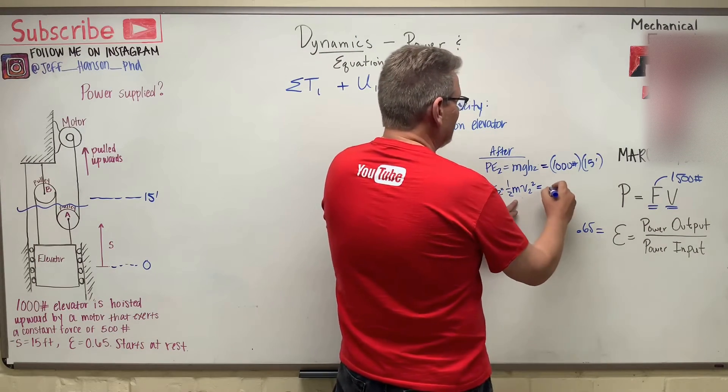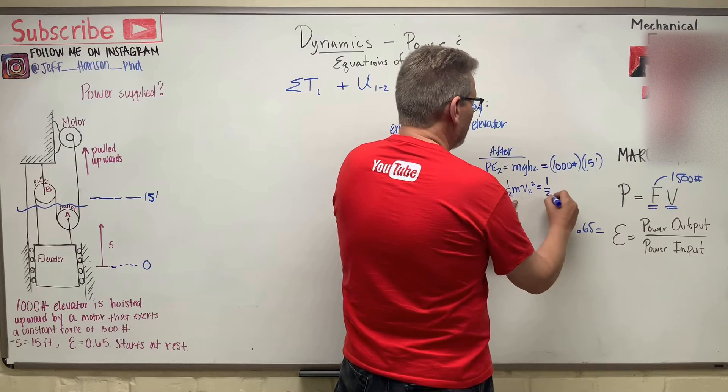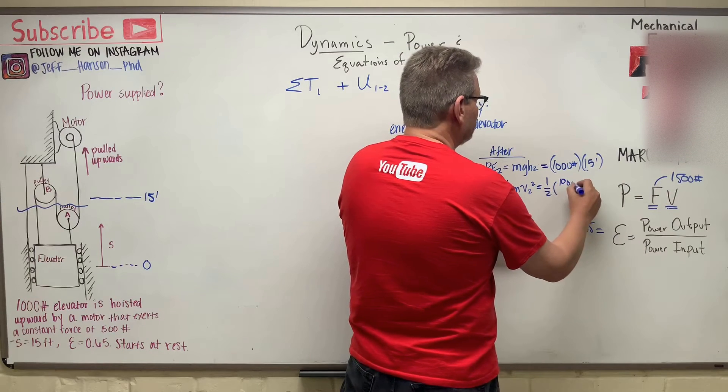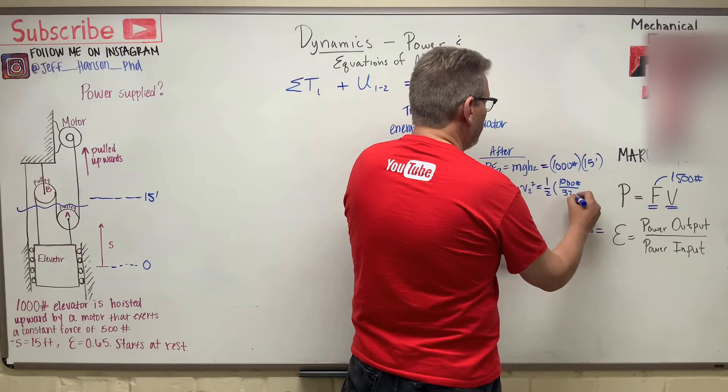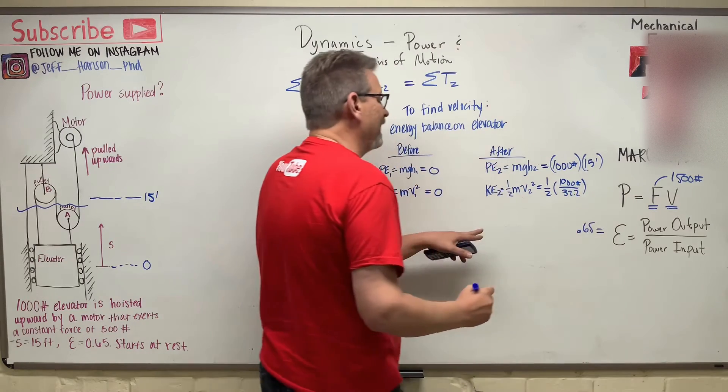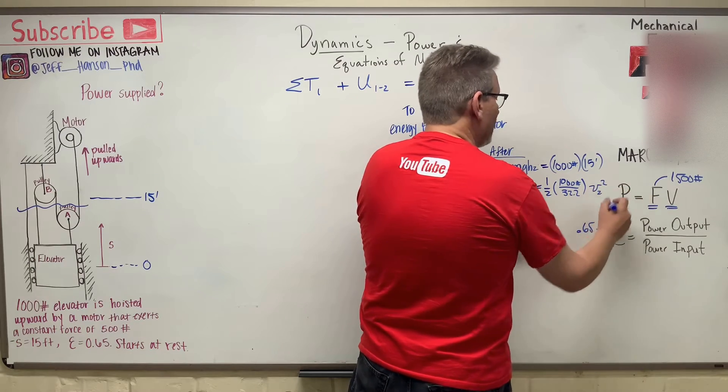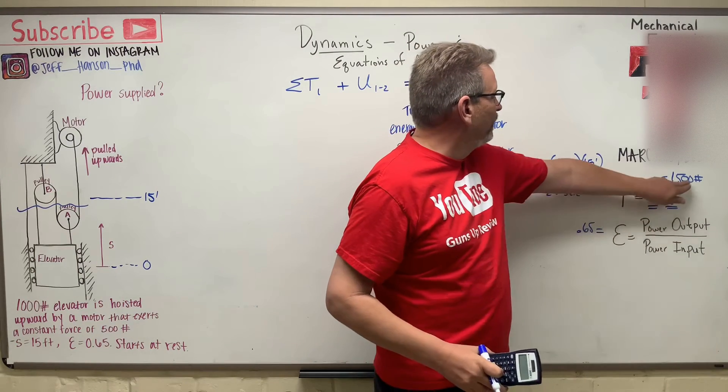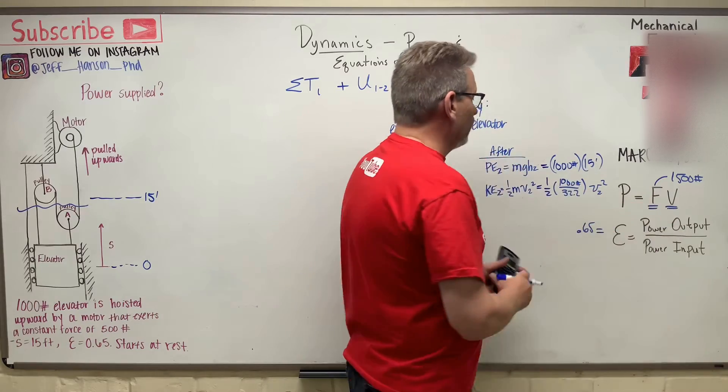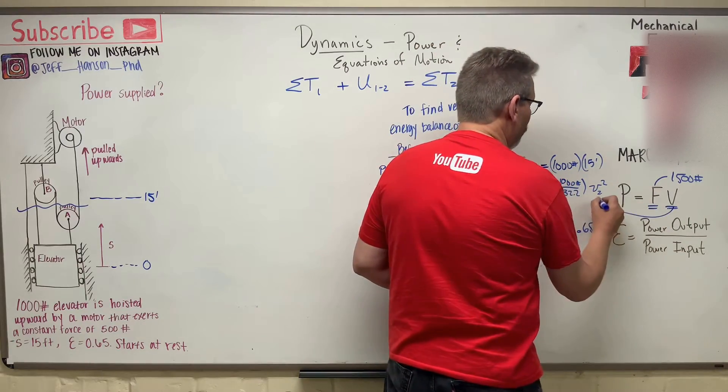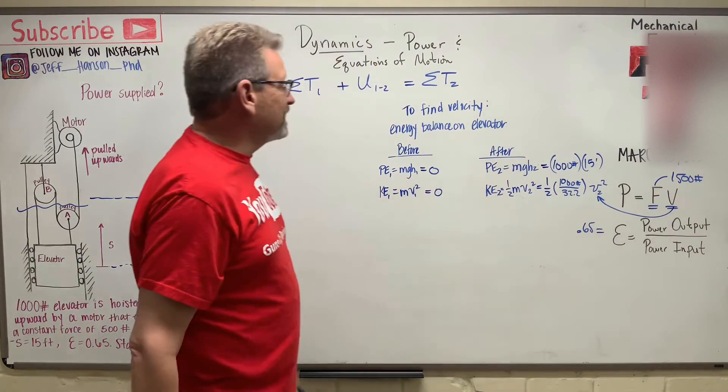So what's the mass? The mass of the elevator is 1,000 pounds divided by 32.2. It's mass, it's not weight, times v2 squared. Now we found f, didn't we, already? We found that guy. The v that we're looking for, that guy is right there. So let's see if we can find him. Let's fill this equation out now.